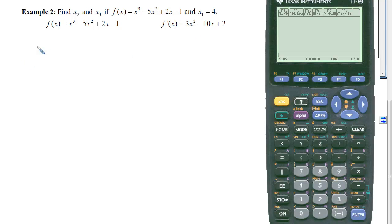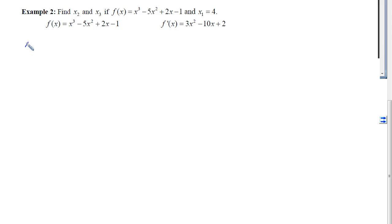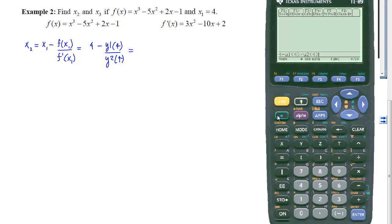So we'll write down in our notes that x sub 2 will equal x sub 1 minus f of x sub 1 over f prime of x sub 1, which for this problem will be 4 minus y1 of 4 over y2 of 4. And we'll go put that into our calculators. Remember to do diamond, enter, to override your calculator's desire to give you an exact value.